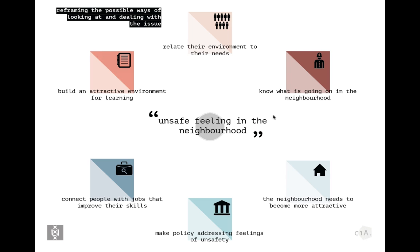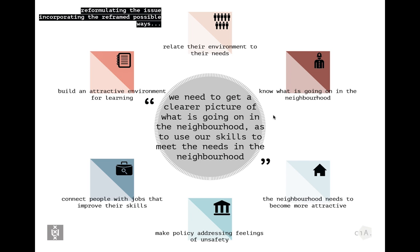Bringing all six stakeholders together creates a completely different picture. You can remove the narrow 'unsafe feeling' framing and replace it with something that broadens available options — by reframing each stakeholder's concerns and reframing the room for possible options. The reformulated issue becomes: 'the need to get a clearer picture of what is going on in the neighborhood, so as to use our skills to meet the needs in the neighborhood.' This incorporates all parties' needs and makes it far easier to get them involved with far less conflict.